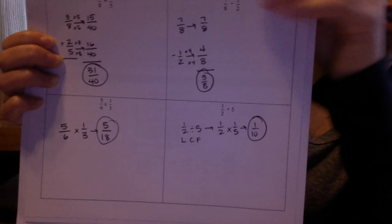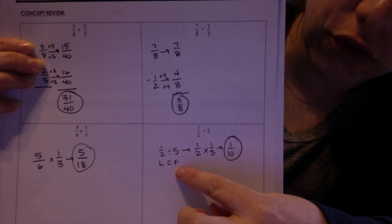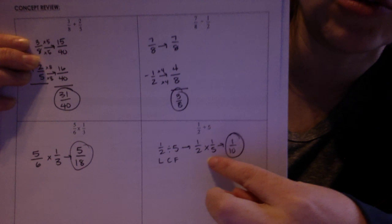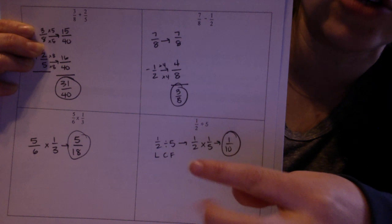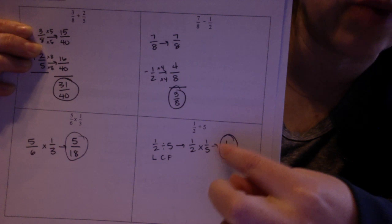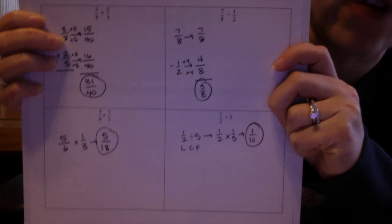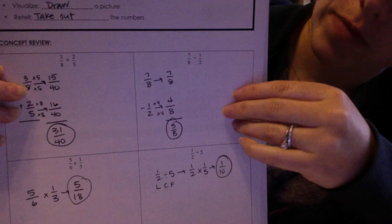Notice division, the last one here, is also horizontal. It is not vertical. Remember, you need to leave, change, flip. So you're going to leave the first factor so 1 half stays the same. Change division into multiplication, which we did right here. And then you're going to flip the second factor. So instead of 5, it's going to be 1 over 5. That's the reciprocal. So then multiply straight across. 1 times 1 is 1, 2 times 5 is 10. So the answer is 1 tenth. You start with a fraction, end with a fraction. So that's your concept review.